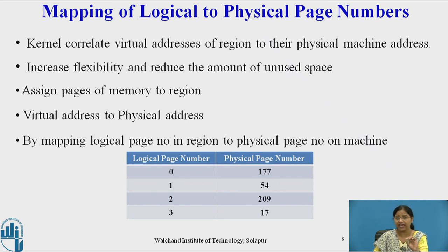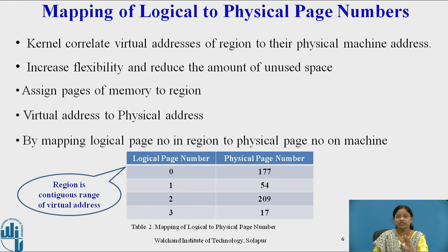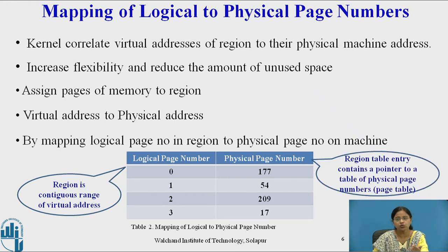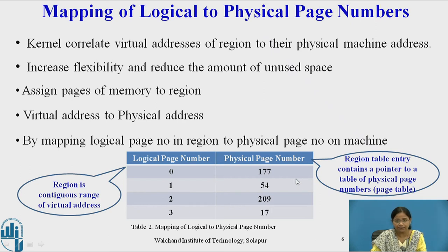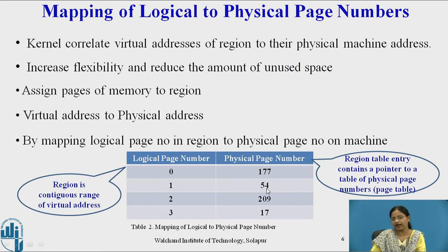Since a region is a continuous range of virtual addresses in a program, the region table entry contains a pointer to a table of physical page numbers — and that whole table is the page table. The logical page number acts as an index for the physical page number in the page table. For example, logical page number 0 is located at physical page number 171, and logical page number 1 is located at physical page number 54. Every logical page number has a corresponding physical page number in memory.